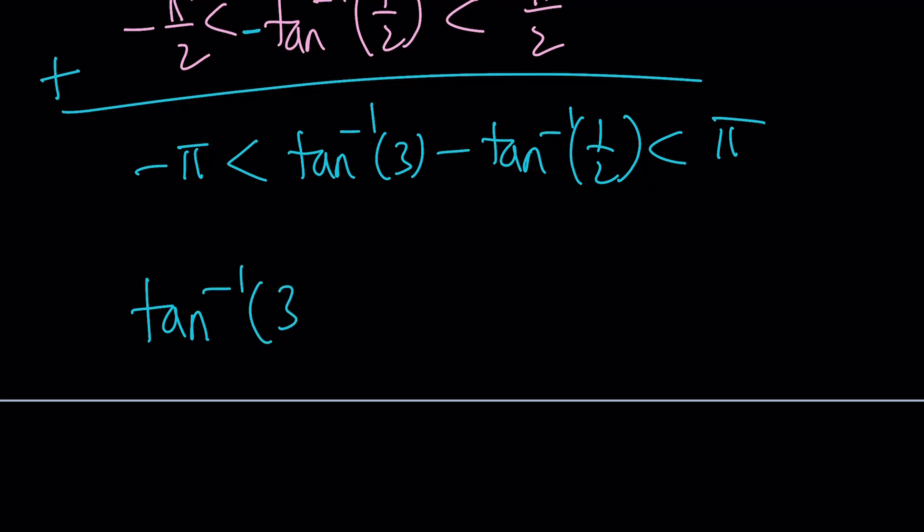And that is going to be pi over 4. Let's go ahead and write that down as our conclusion. Tan inverse 3 minus tan inverse 1 half is equal to pi over 4. And that's such a special angle.